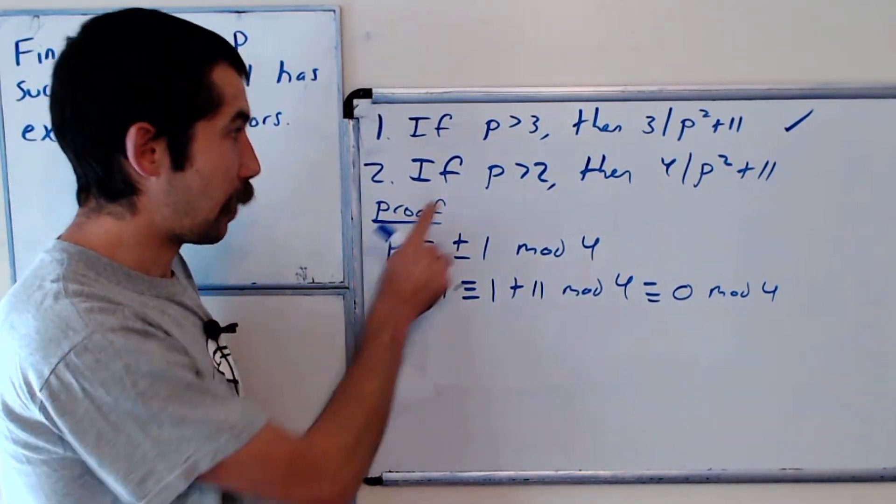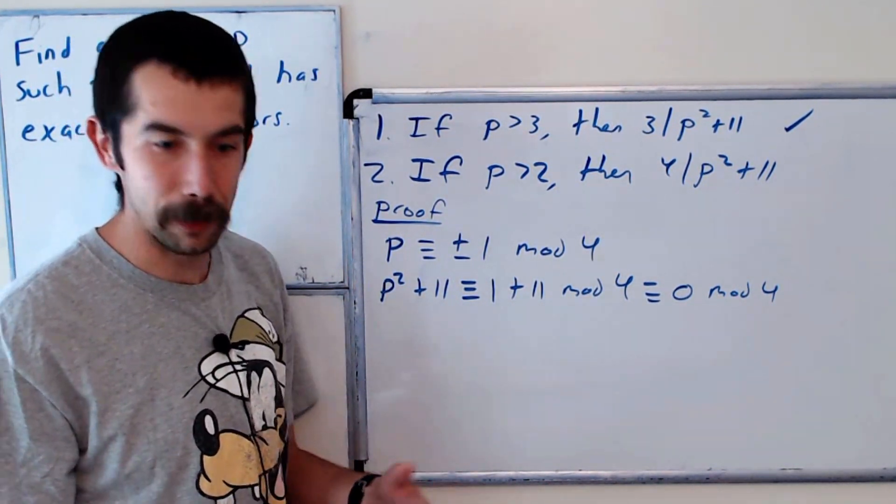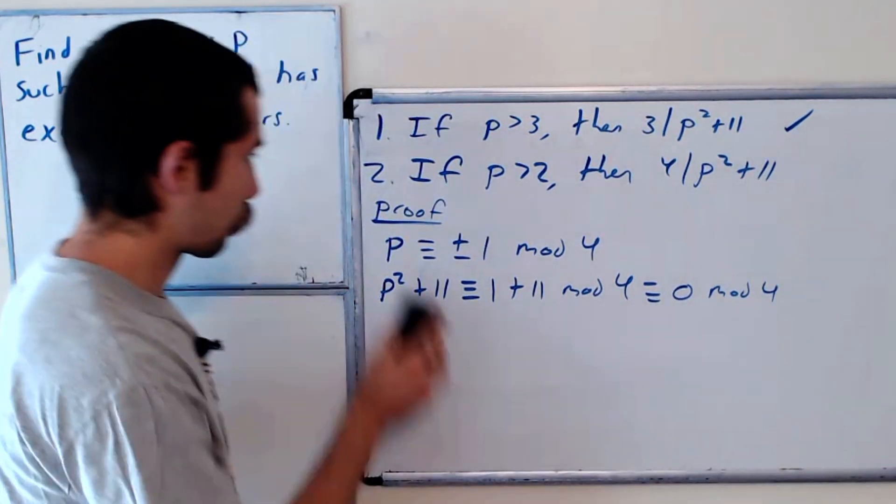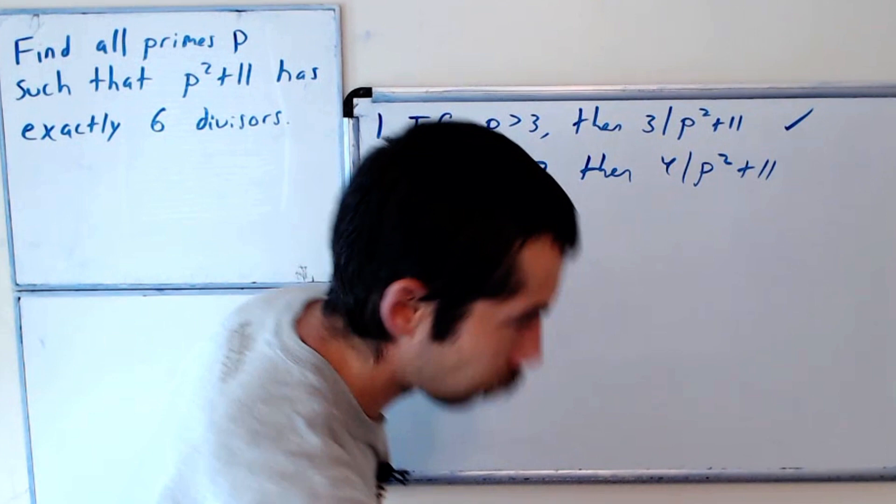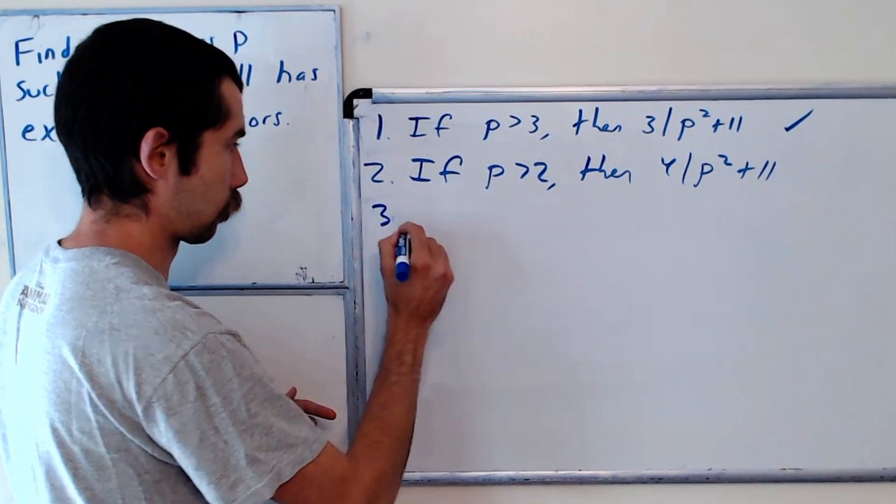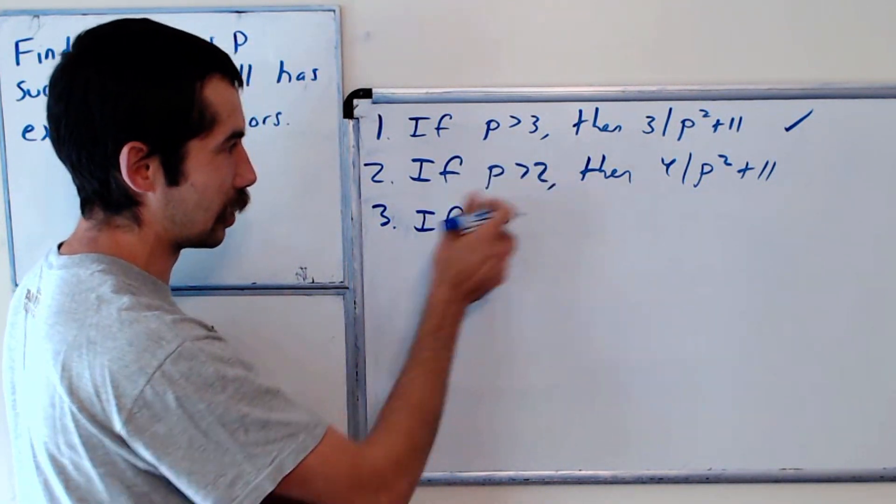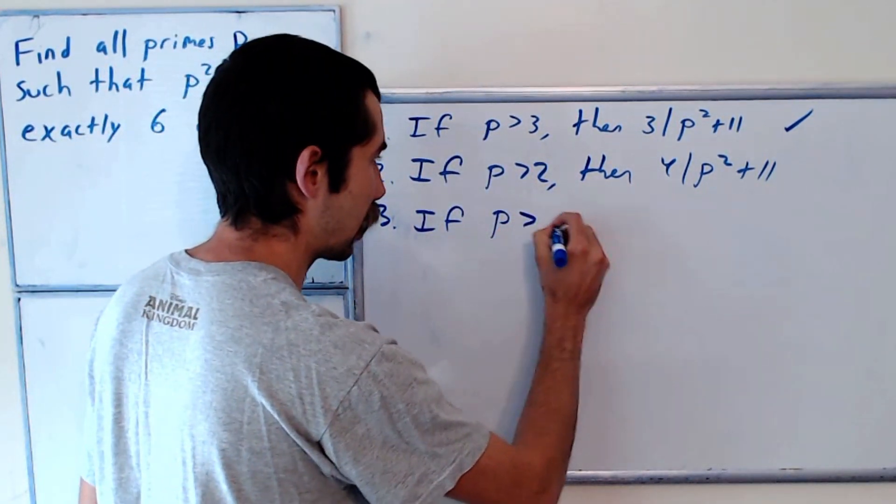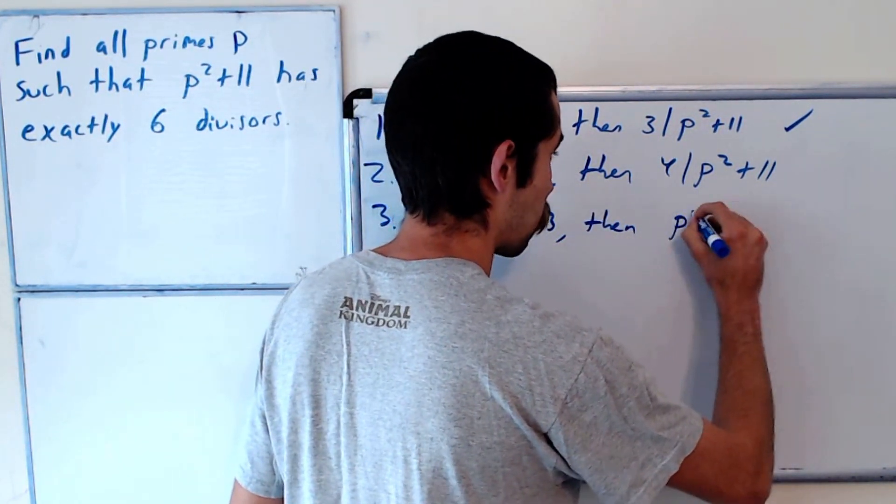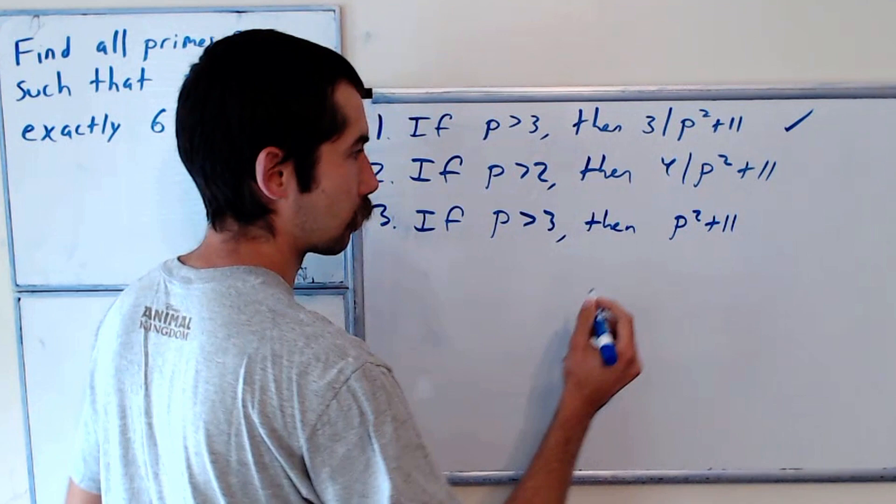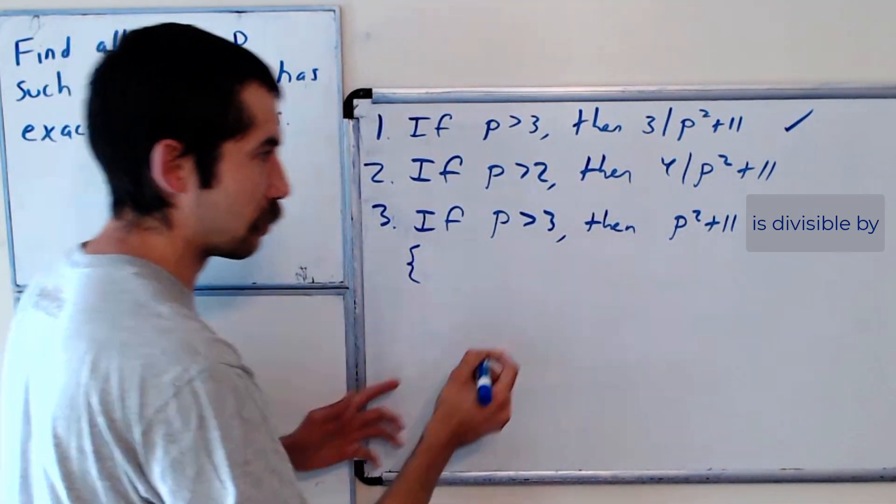Okay, so if p is bigger than 2, then p squared plus 11 is divisible by 4. And so what's the point putting these two together? So anything that's bigger than 3 is also bigger than 2. So combining these, if p is bigger than 3, then p squared plus 11 is divisible by all of these values.